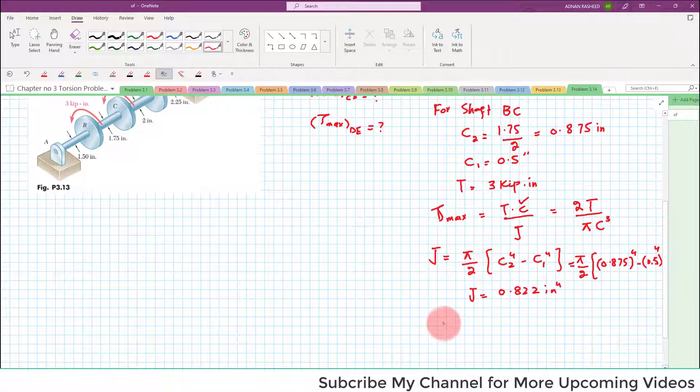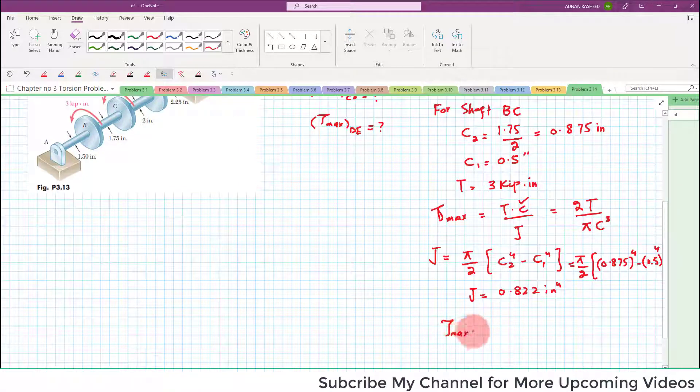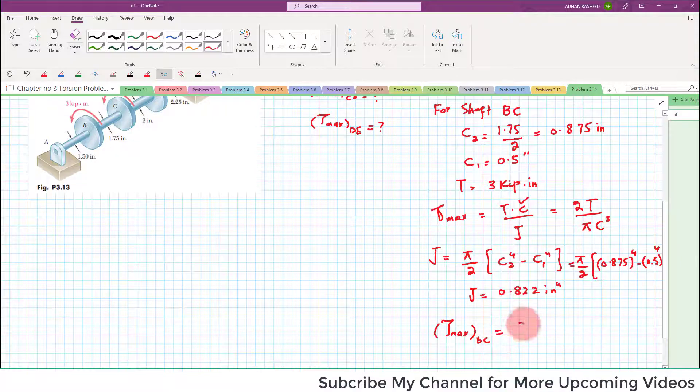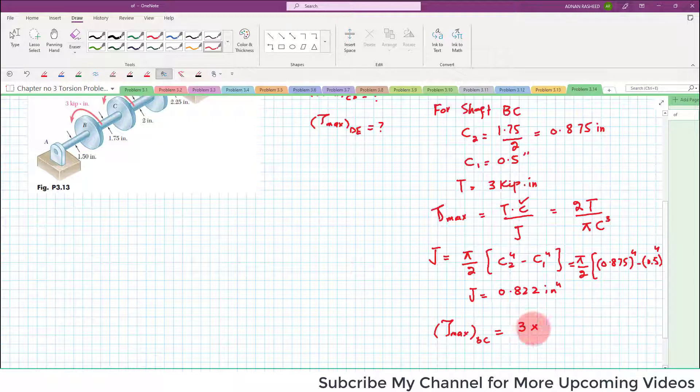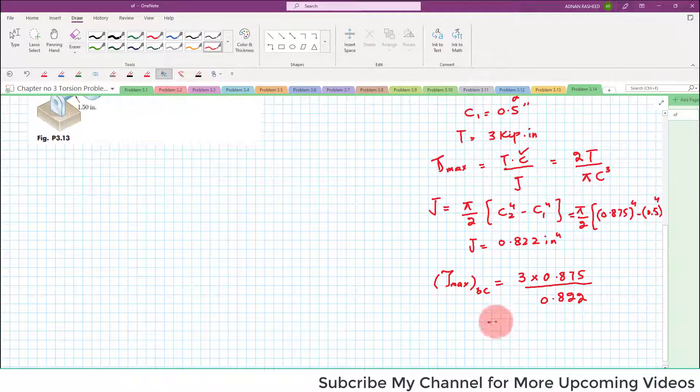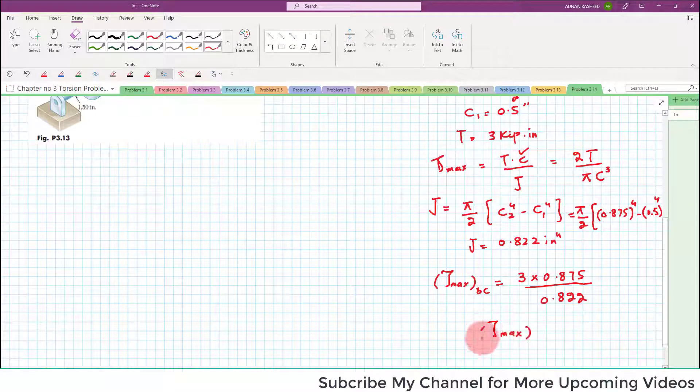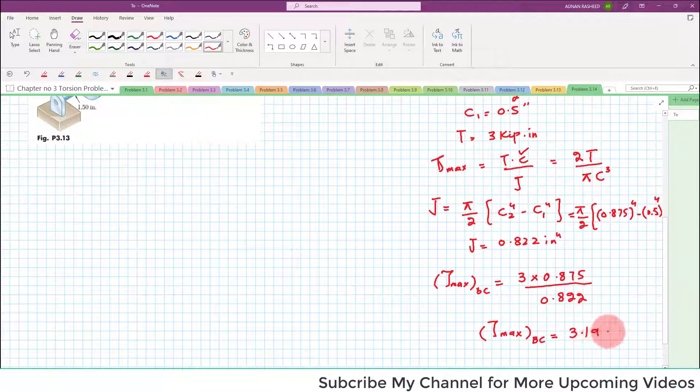Now you have all the values you can find maximum shearing stress in shaft BC that is equal to T into C divided by J. T is 3 kips and C is the outer diameter which is 0.875 divided by J which is equal to 0.822. So maximum shearing stress in shaft BC comes out to be 3.19 ksi. Here this is the part first, for part B.